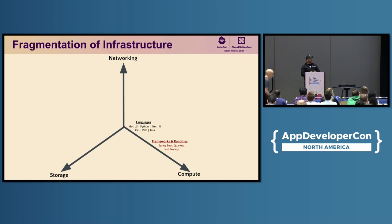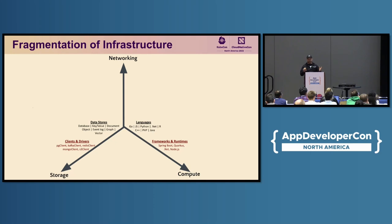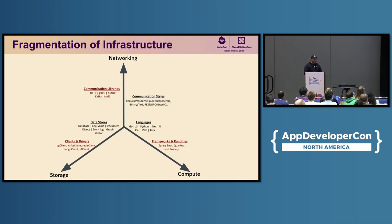And then we have different frameworks and runtimes to use those. Then we have different kinds of data stores which are good for storing and retrieving data for different use cases. For example, there is database for transactional processing, columnar databases for reporting, there is key value stores, document stores, graph databases, and now vector databases, and so forth. And as developers, we have to use different clients to interact with these different types of data stores. And the more applications we create, the more granular they get, such as microservices and functions, there will be more networking.